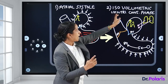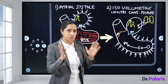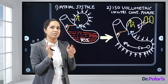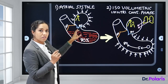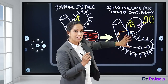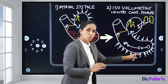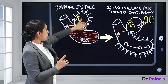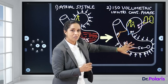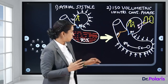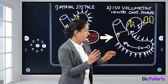Phase 2 — Isovolumetric Ventricular Contraction: The ventricle is contracting as a closed chamber. The atrioventricular valve (open in Phase 1) is now closed. Both the input and output valves of the ventricle are closed. The ventricle contracts as a closed chamber — hence 'isovolumetric,' meaning no change in volume.